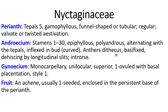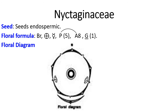Anthers are dithecous, basifixed, dehiscing by longitudinal slits, and they are introrse — introrse means they remain inside the perianth tube. Gynoecium is monocarpellary, unilocular. Ovary is superior with one ovule and basal placentation. Number of styles is 1. Fruit is an achene, usually one-seeded, enclosed in the persistent base of the perianth. Seeds are endospermic.